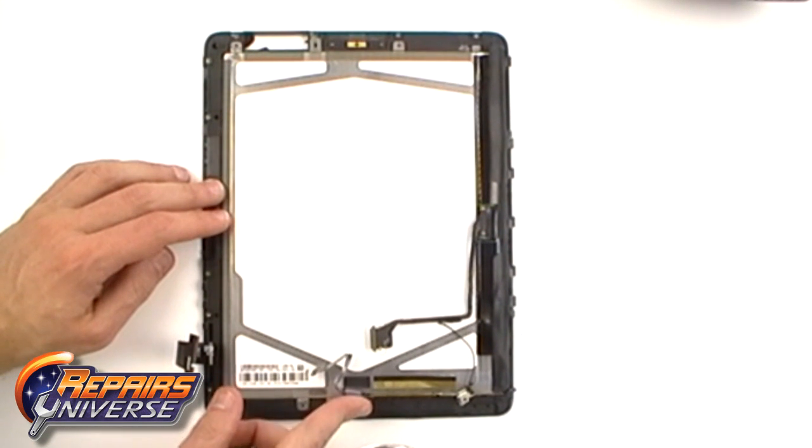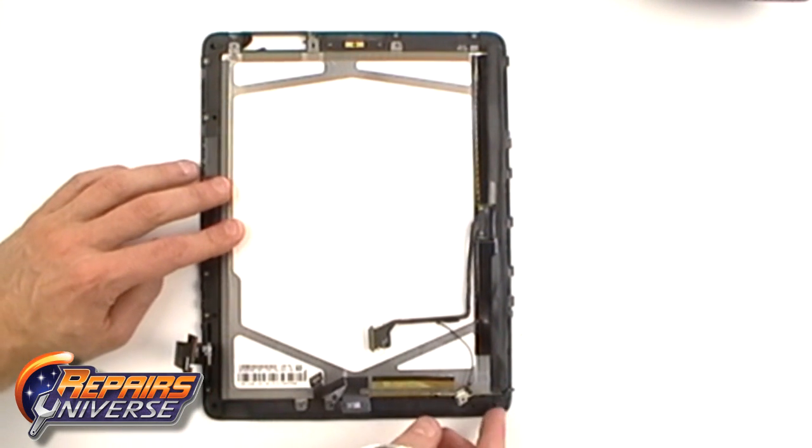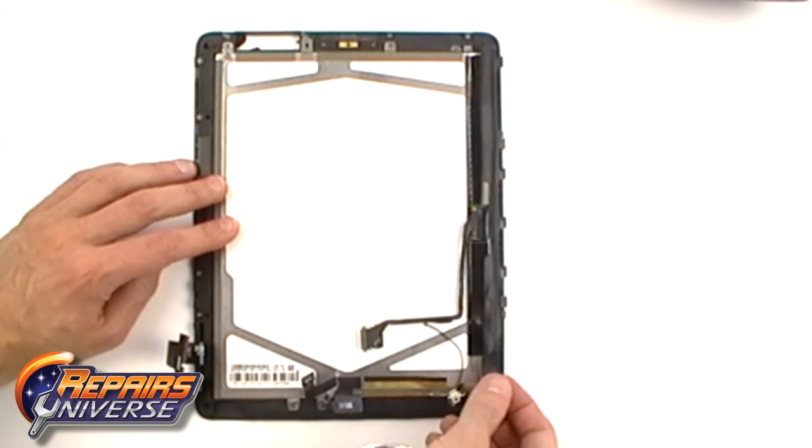Before we can remove the LCD screen, we need to ease off the flex cable as being shown here.